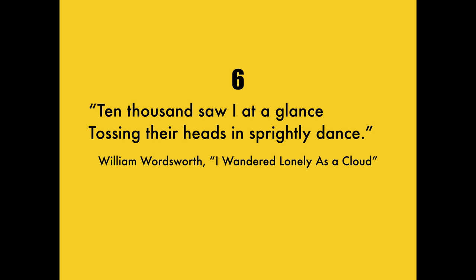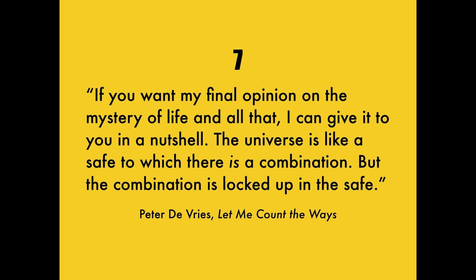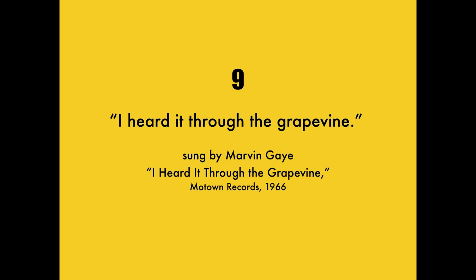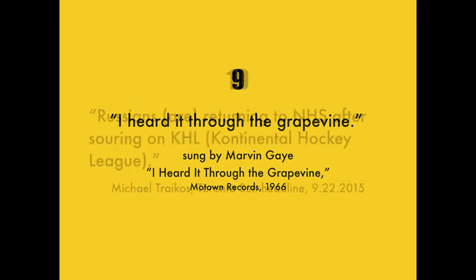Six: here the poet is talking about a field of flowers — ten thousand saw I at a glance, tossing their heads in sprightly dance. Number seven: if you want my final opinion on the mystery of life and all that, I can give it to you in a nutshell. The universe is like a safe to which there is a combination, but the combination is locked up in the safe. Number eight: I can resist everything, except temptation. Number nine: I heard it through the grapevine.